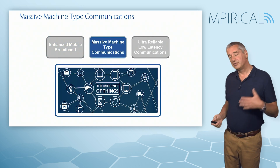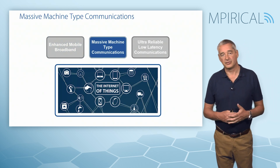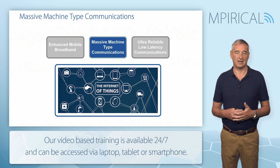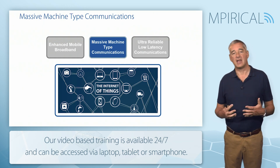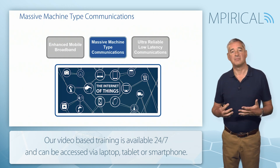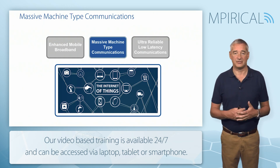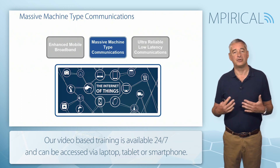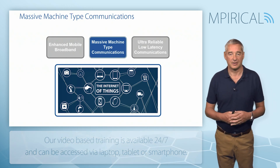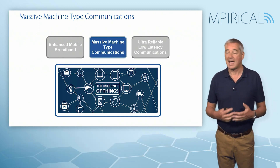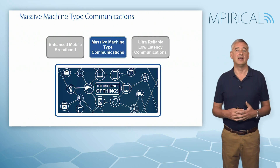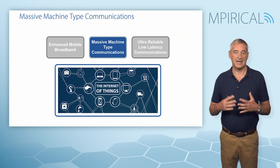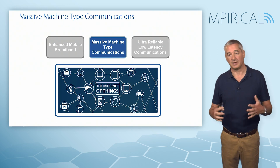Moving on to massive machine type communications, this is all about the Internet of Things — using the 5G network to connect millions, if not billions, of devices and bringing information to and from the various sensors. This is a key area of 5G development in terms of handling Internet of Things traffic.